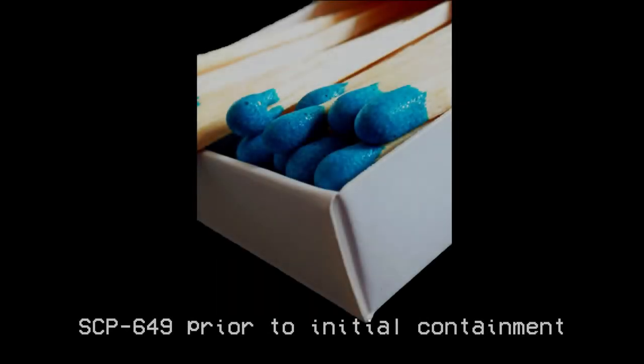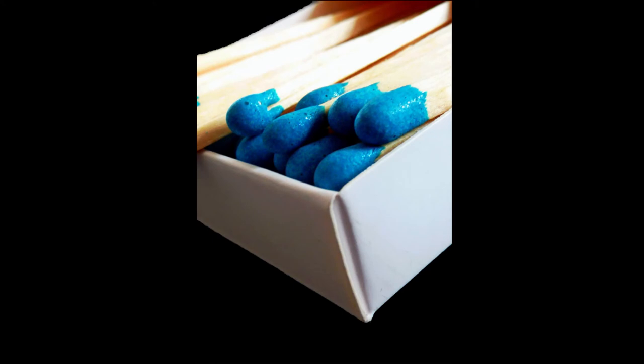SCP-649 is to be kept closed in a standard containment locker located within Site-77. It should not be opened unless testing is being performed. SCP-649 is not to be moved from its containment chamber unless testing is being performed. In case of containment failure, heating implements should be placed in the cell to inhibit SCP-649's effect.